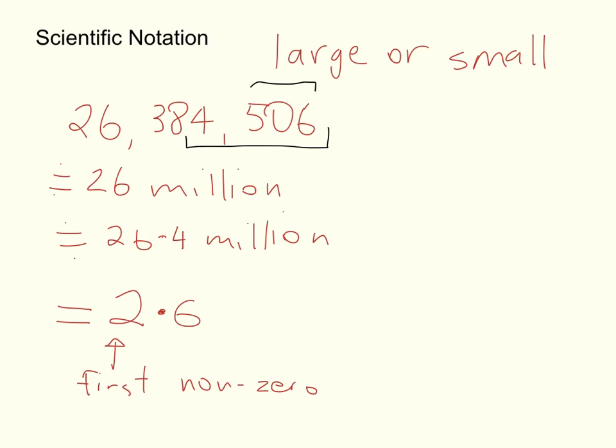So it will never be 26 point something, it will always be 2.6 in this case. And I'm going to call it 2.64 times 10 to the power of something. Now we're always using powers of 10 for scientific notation, because a power of 10 simply moves my decimal place to the left or to the right.